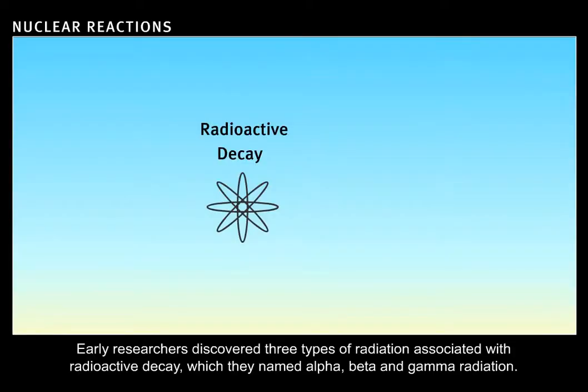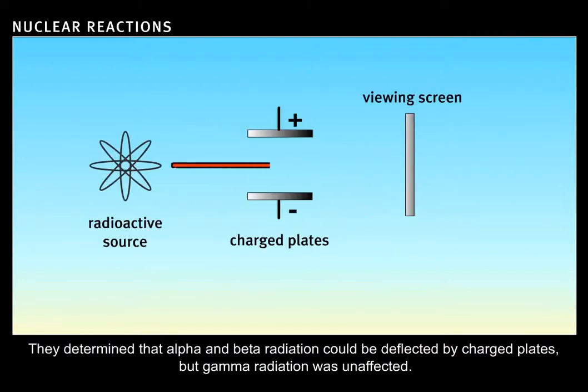Early researchers discovered three types of radiation associated with radioactive decay, which they named alpha, beta, and gamma radiation. They determined that alpha and beta radiation could be deflected by charged plates, but gamma radiation was unaffected.